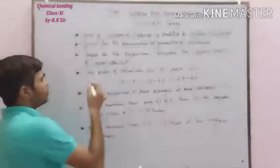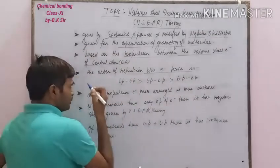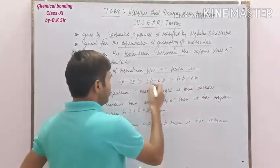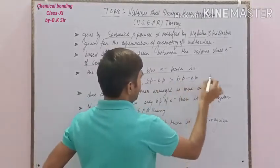Next, the order of repulsion between electron pairs is: lone pair-lone pair electrons have the maximum repulsion, then lone pair-bond pair electrons, and then bond pair-bond pair electrons.